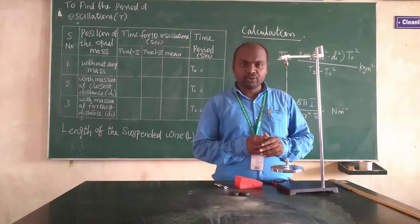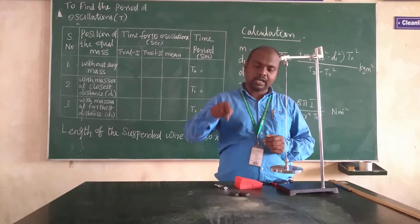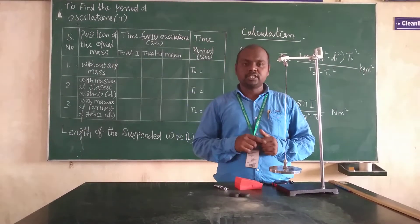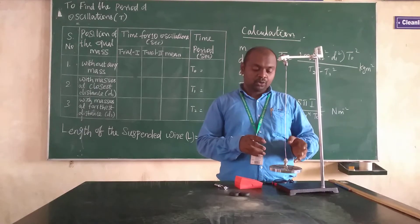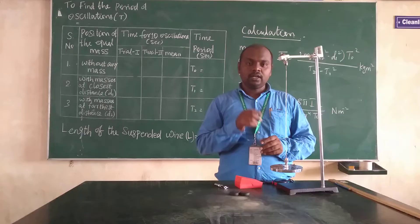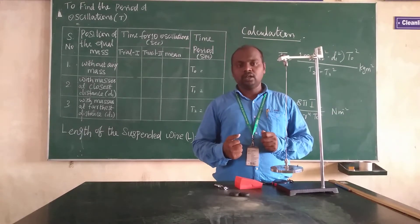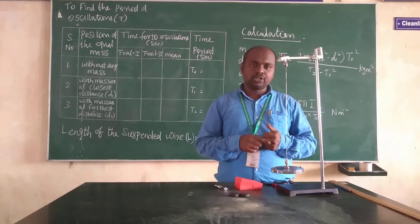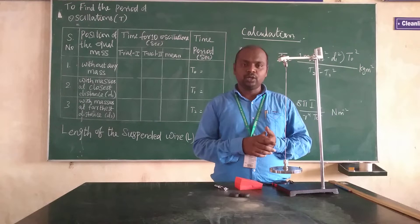First of all we must know what we mean by oscillation. Oscillation means one complete clockwise rotation and one complete anticlockwise rotation together — that comprises one oscillation. What we are going to do in this experiment is find the time for ten oscillations, then from that we calculate the time period for one oscillation.